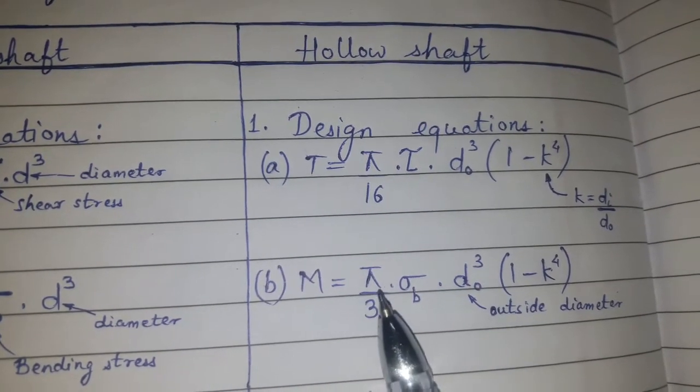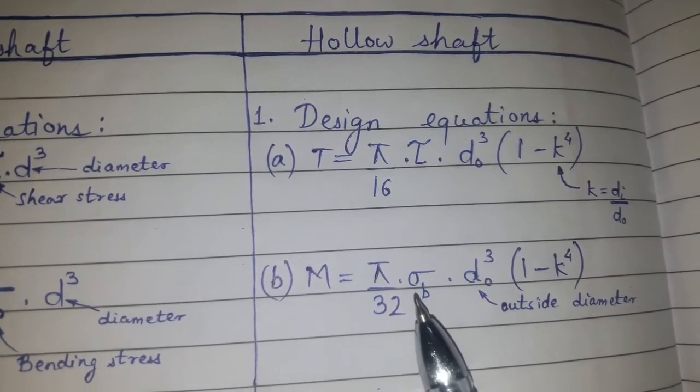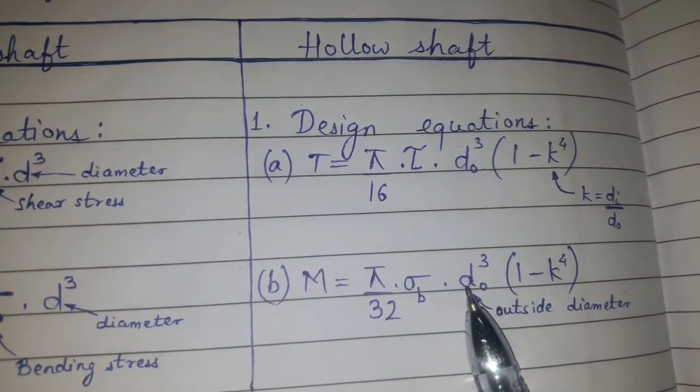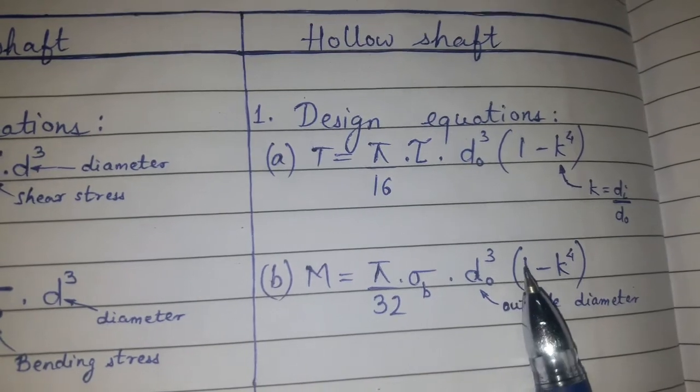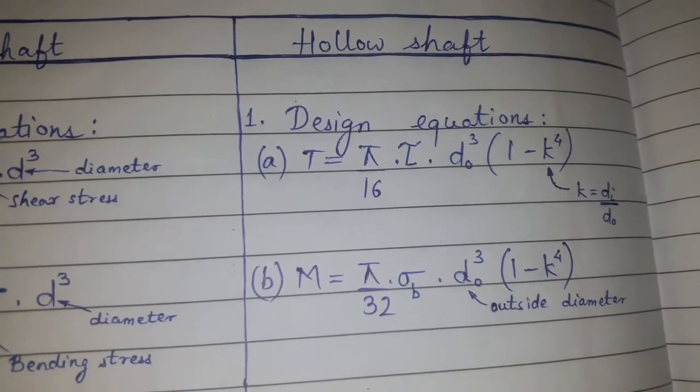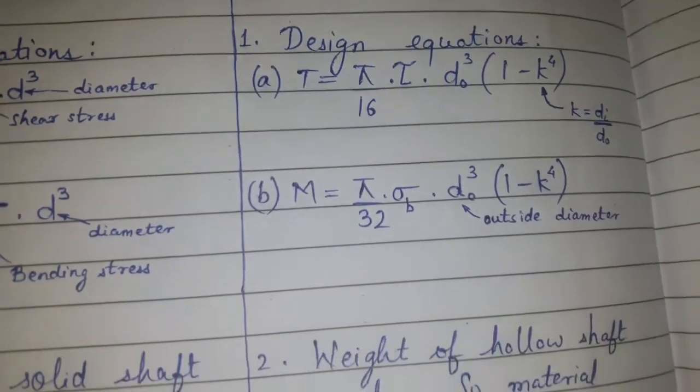Bending moment is equal to pi by 32 into bending stress into outside diameter cube into 1 minus k raised to 4, where k is equal to inner diameter upon outer diameter.